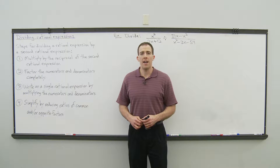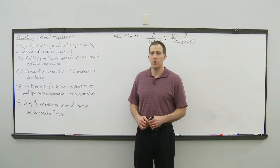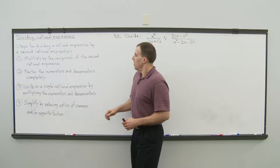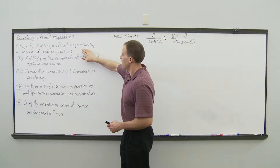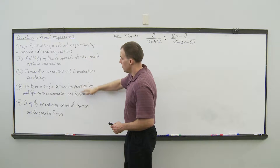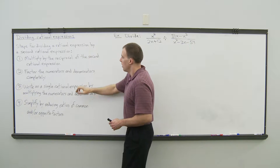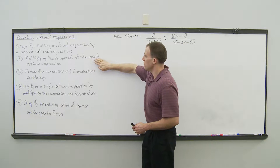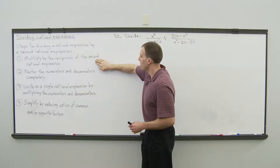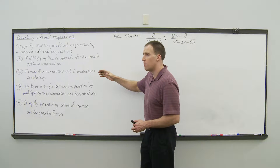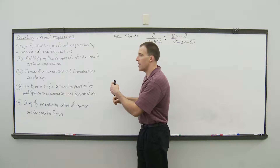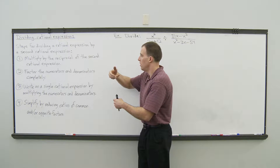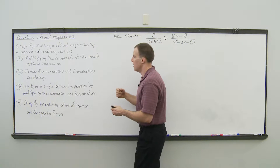Here's the process for dividing rational expressions. There are four steps for dividing a rational expression by a second rational expression. First, we need to multiply by the reciprocal of the second rational expression. Keep the first one the same, change the division to a multiplication, and then take the reciprocal of the second fraction.